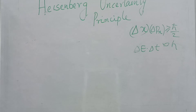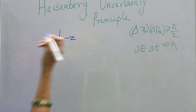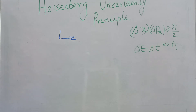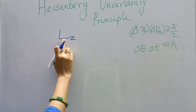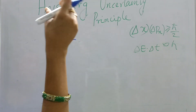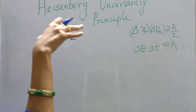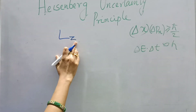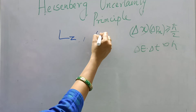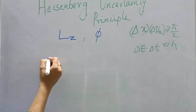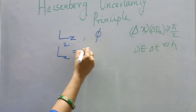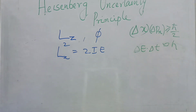Another pair of conjugate variables: we can consider the component of angular momentum along the direction perpendicular to the plane of the orbit. We know that L² = 2I·E.